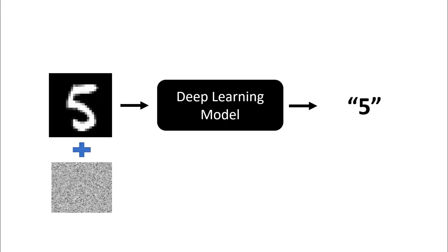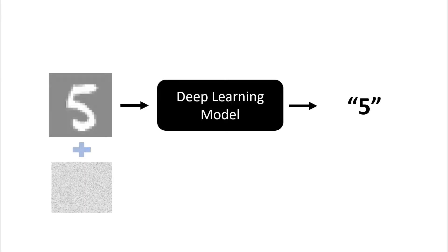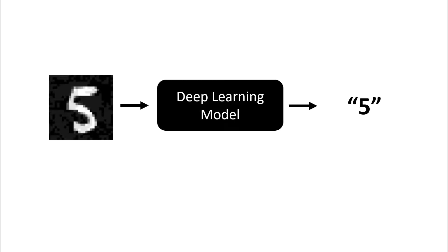Although the image still looks like a five to us, to the deep learning-based model, this particular data point has moved enough to cross a classification boundary, so that the class prediction by the system is incorrect. And there you have a successful adversarial attack.